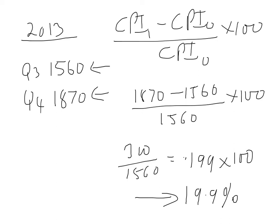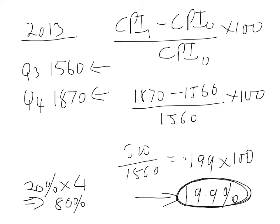We could annualise it - rounding up to 20%, there are four quarters in a year, so multiply by four: the estimated annualised rate of inflation would be 80%. That's huge - real hyperinflation, unlikely we'd ever experience that. Coming back to the 19.9% value: what does it really mean? It means at the end of three months you're going to have to spend 20% more to acquire that same basket of goods and services you purchased in quarter three of 2013.